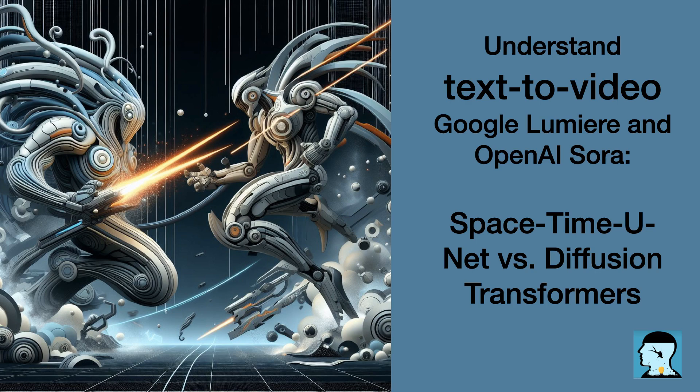How do the predictive capabilities of space-time unit in Lumiere and the gradual assembly approach of Diffusion Transformers in Sora impact the coherence and flow of the narrative in the generated videos from text prompts? Can you discuss how these mechanisms influence the storytelling aspect and overall viewer engagement in the videos produced by each AI model?